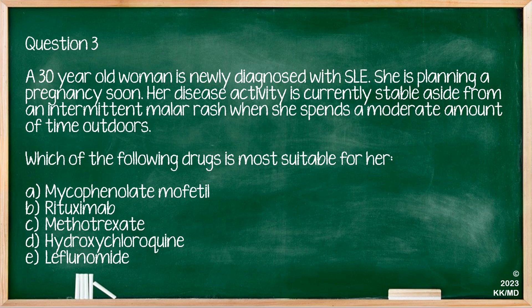Question three: a 30-year-old woman is newly diagnosed with SLE and is planning a pregnancy soon. Her disease activity is currently stable, aside from an intermittent malar rash when she spends time outdoors. Which drug is most suitable for her? This tests prescribing safety in pregnancy. Hydroxychloroquine is the first line and is actually a safe drug to continue during pregnancy in lupus. As a recall, anyone on hydroxychloroquine for five years or more will need annual ocular screening according to UK standards.